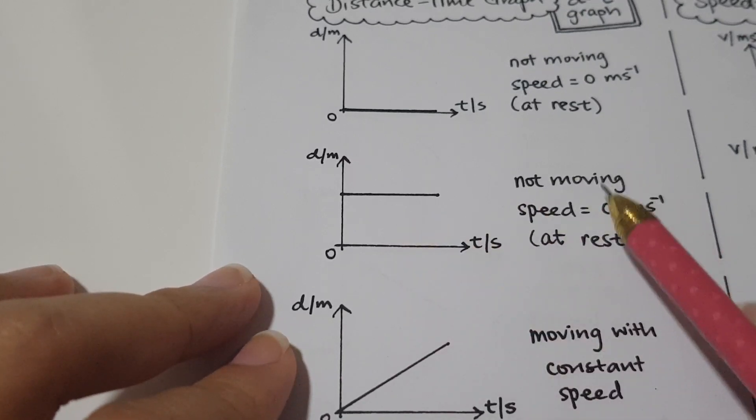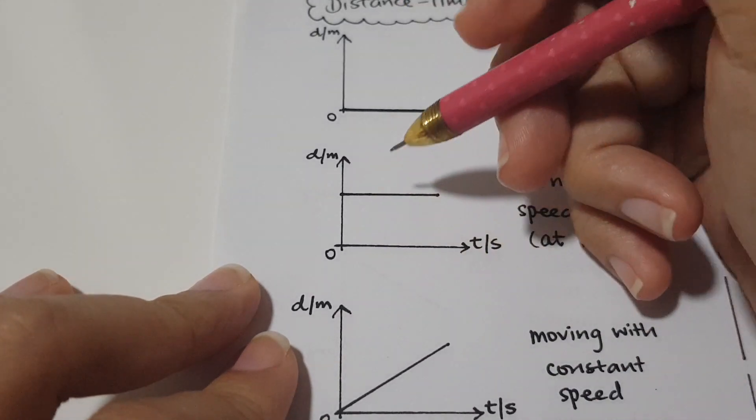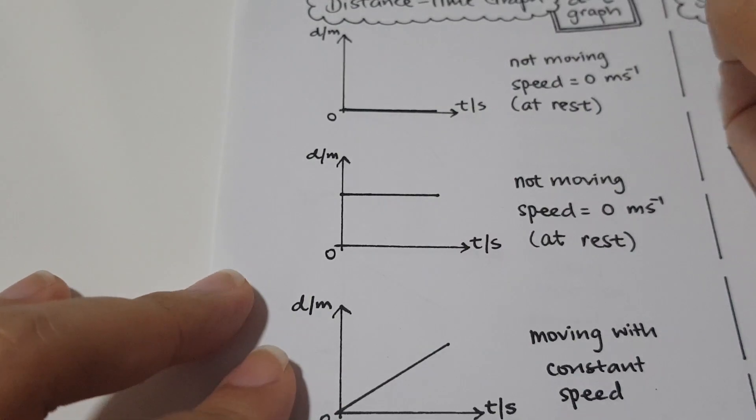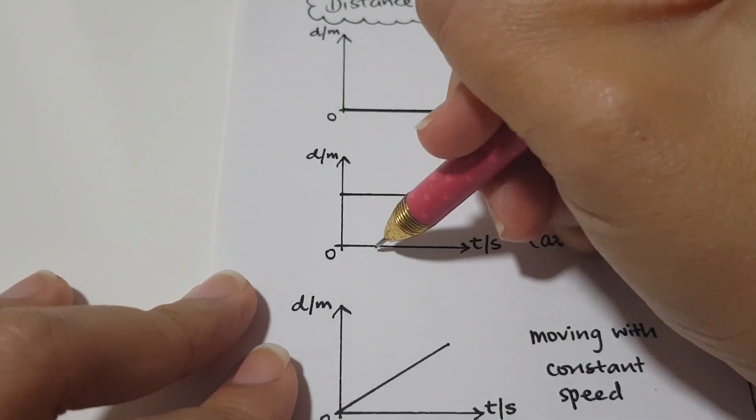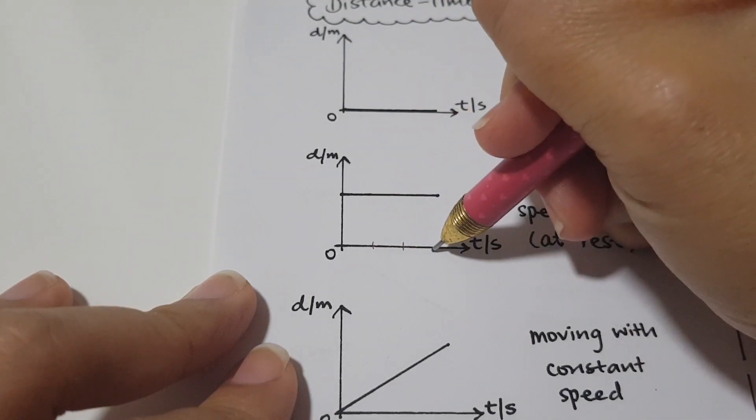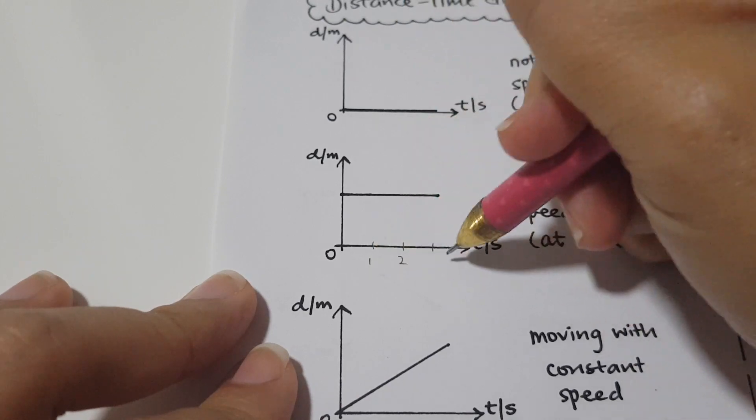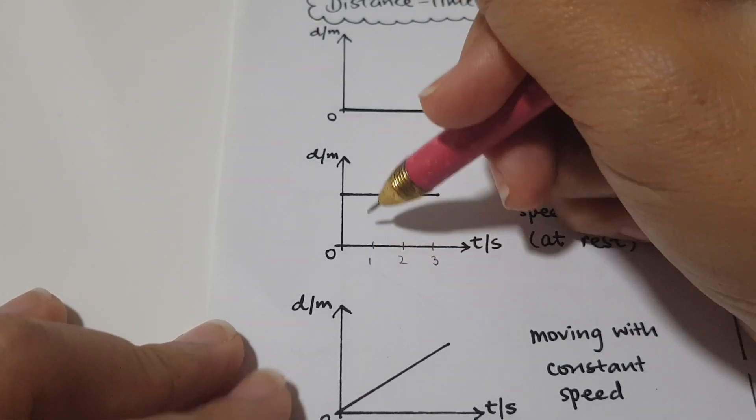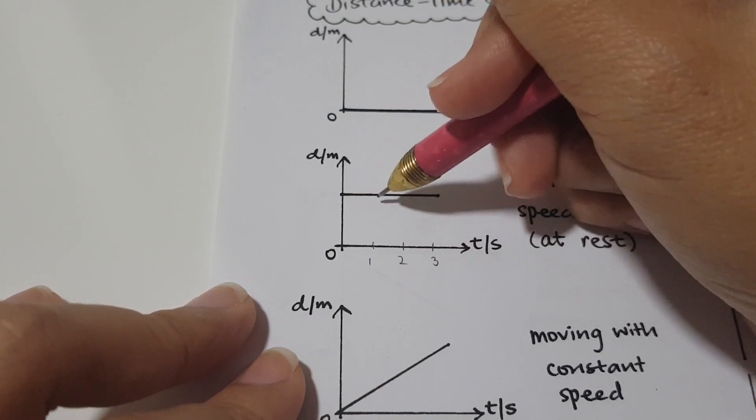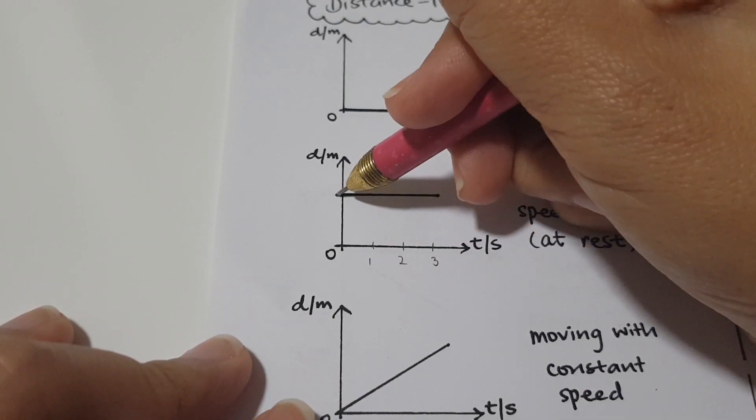So this is actually not moving at rest. How do I see that? If I'm going to put it, let's say I'm going to give it a few different times. Maybe one second, two seconds, three seconds. So at different times, we realize that the distance is constant. At the first second, it's at this distance.